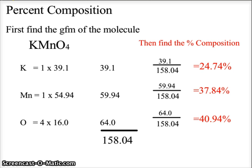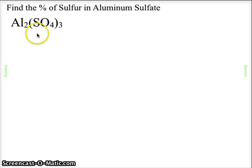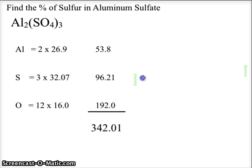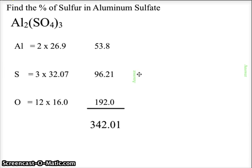So let's look at another example. In this case, we're going to look at aluminum sulfate, Al2(SO4)3, and we're looking for the percent of sulfur. So in this case, we're going to take the aluminum, and we're going to do 2 times 26.9, giving us 53.8.